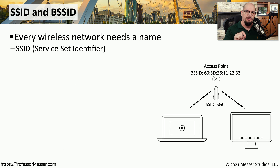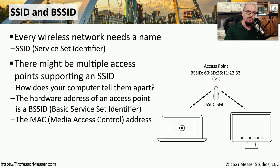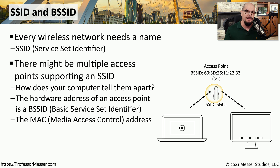When connecting to a wireless network, you'll notice there's usually a name listed in the operating system, such as SGC1 or Guest. That wireless name is referred to as an SSID, or service set identifier. In a larger organization, wireless networks are all named the same across multiple buildings. There are multiple access points that all have the same SSID name but a different BSSID, or basic service set identifier. You can think of the BSSID as the physical MAC address of the wireless access point.